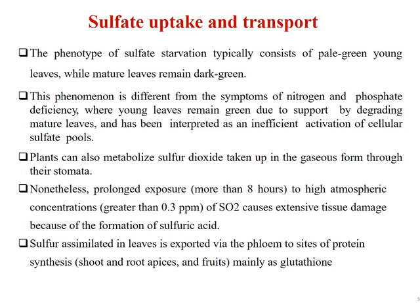Plants can also metabolize sulfur dioxide taken up in gaseous form through their stomata. Prolonged exposure of more than 8 hours to high atmospheric concentrations greater than 0.3 parts per million of sulfur dioxide causes extensive tissue damage due to the formation of sulfuric acid. Sulfur in leaves is exported via the phloem to sites of protein synthesis in shoots, roots, and fruits, mainly as glutathione.